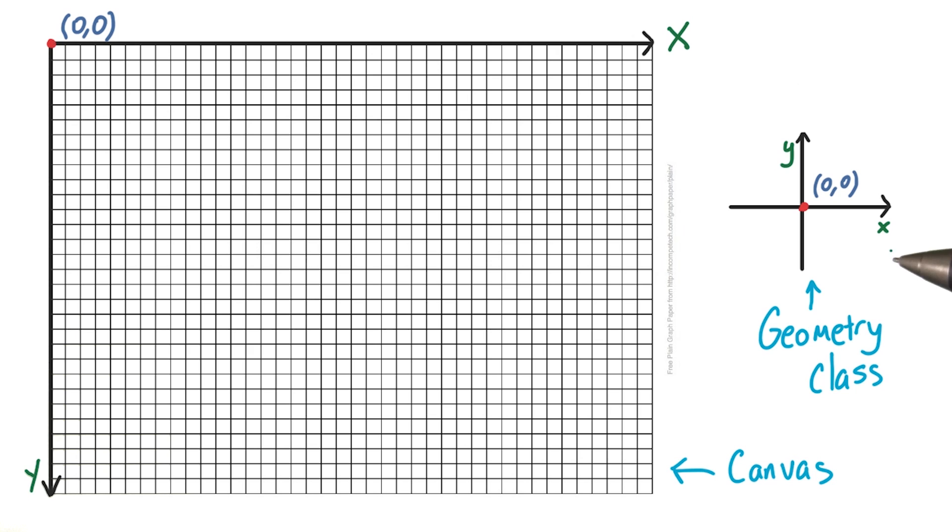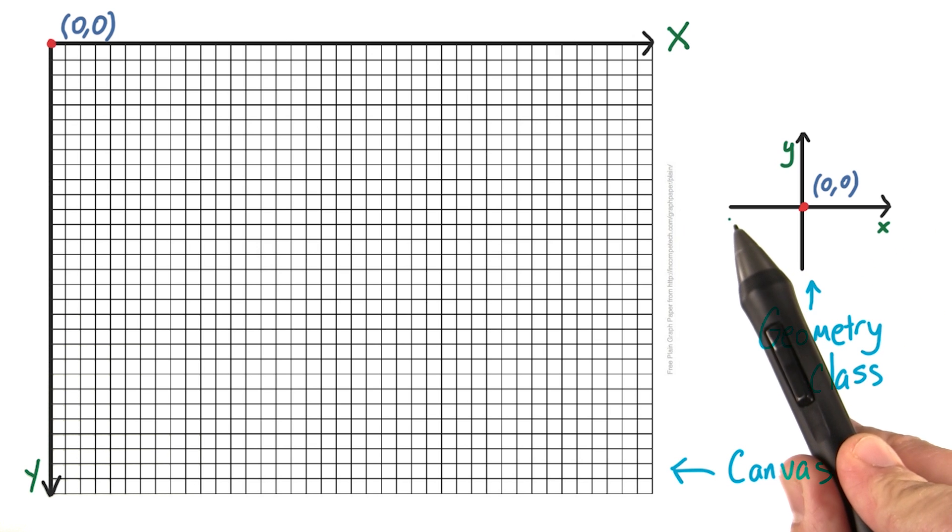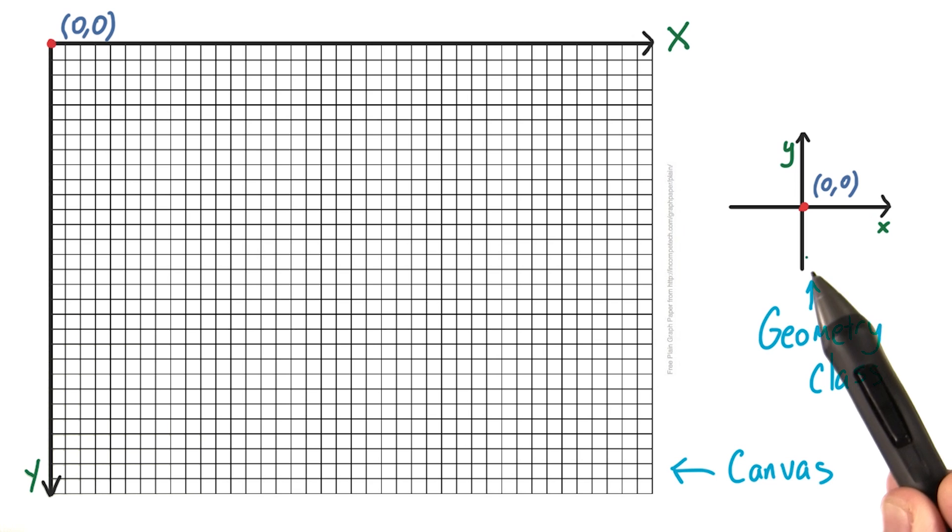In geometry class, we use the Cartesian coordinate system, which looks like this. The Cartesian system has the x-axis going from left to right, and the y-axis going from bottom to top.